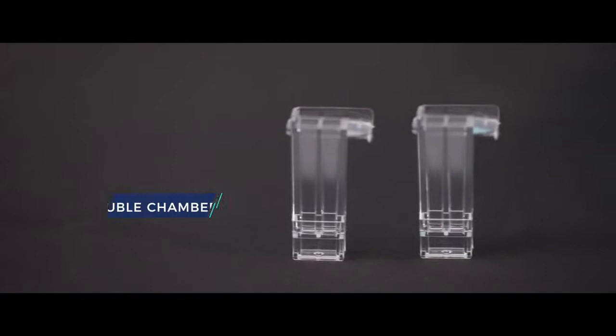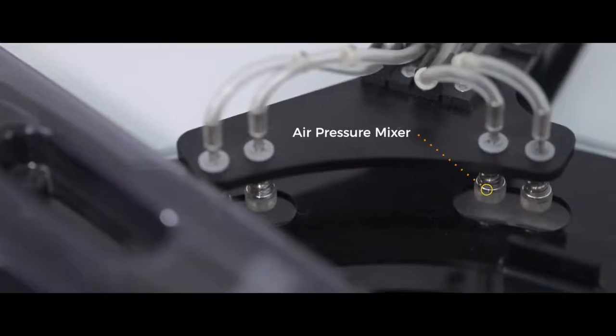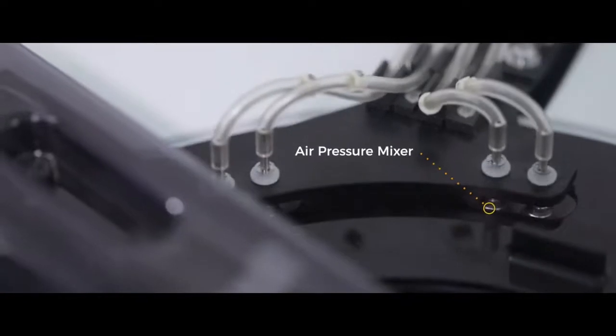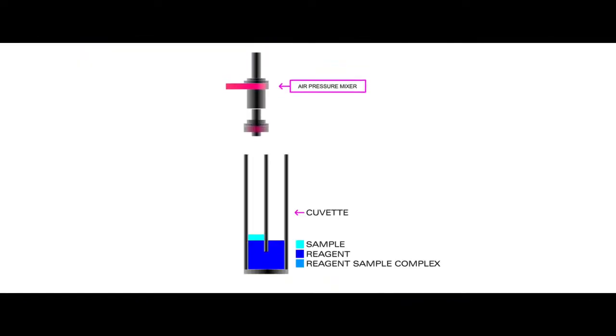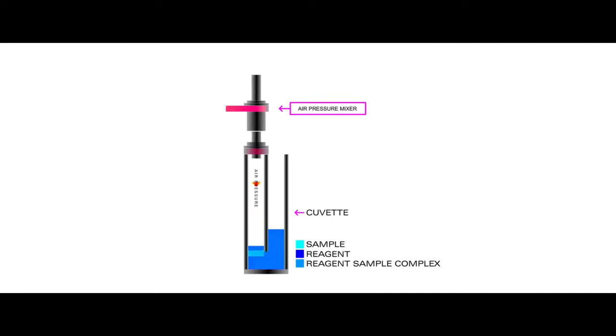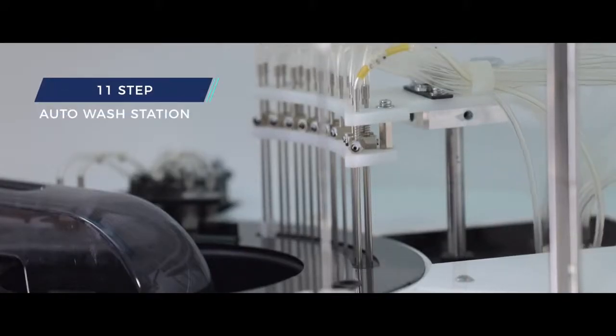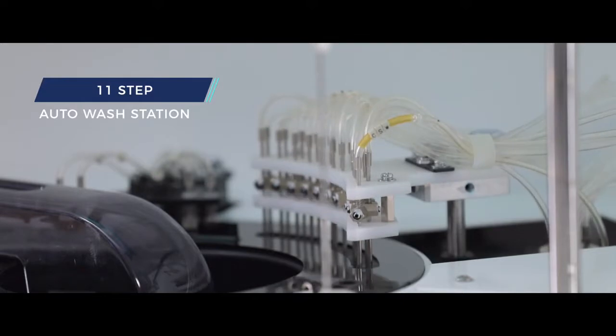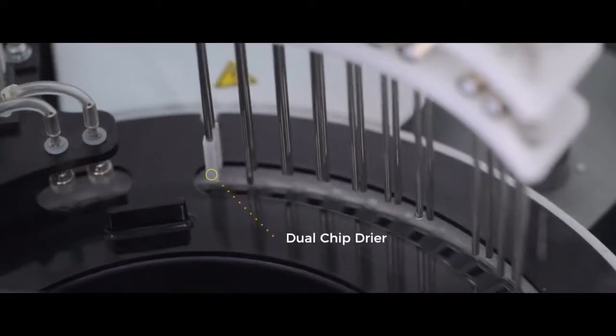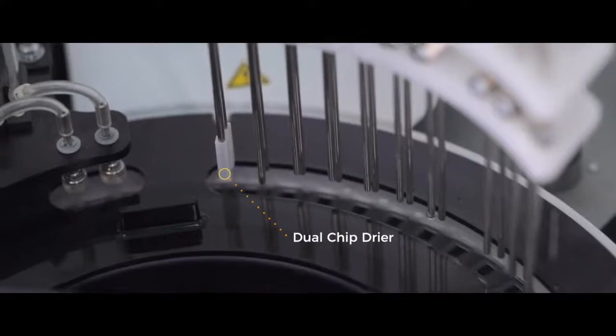TMS-30i uses patented double-chambered cuvette in the reaction tray. The cuvettes are specially designed for air pressure mixing. This type of contactless mixing avoids the chances of contamination and there is no water usage, unlike in other equipment for washing the stirrer-mixer probes. All 60 cuvettes are automatically cleaned by the 11-step wash station with the lowest water consumption in the segment of 3.8 liters per hour.